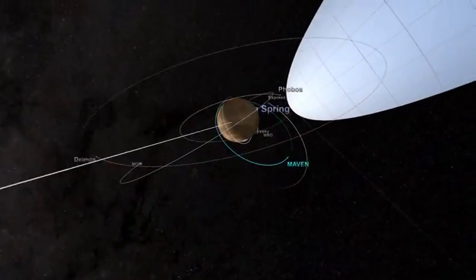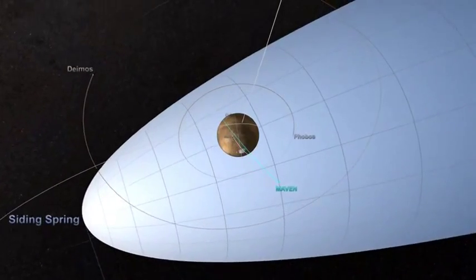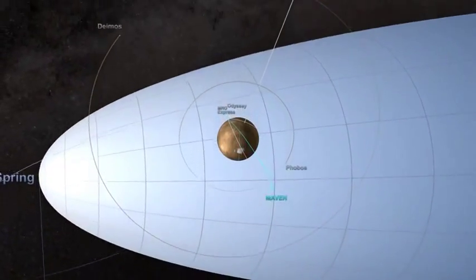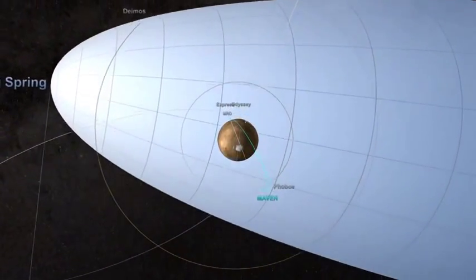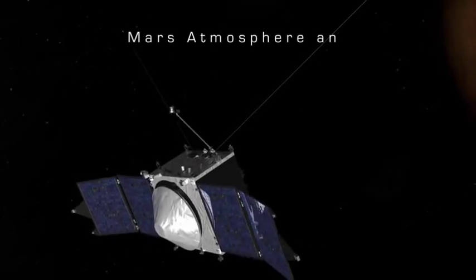Scientists believe that the odds of hitting dust are low, but with particles moving at 33 miles per second, NASA isn't taking chances and will position its orbiters behind Mars during the period of greatest danger.